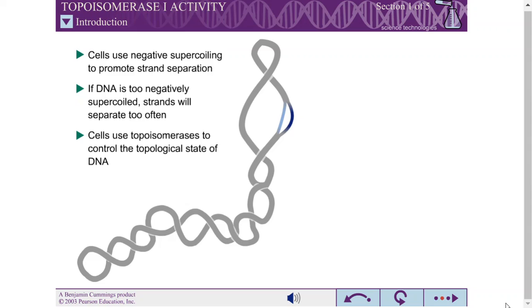The topological state of DNA is controlled by a class of enzymes called topoisomerases. Topoisomerases are divided into two broad classes: type I topoisomerases and type II topoisomerases.